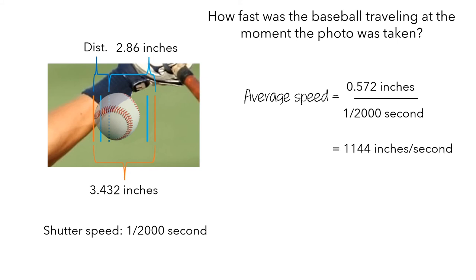And this is equal to 1,144 inches per second, which is the same as 65 miles per hour. While this isn't actually the instantaneous speed of the ball because it was taken over an interval of time, this average speed is a good approximation of the instantaneous speed of the ball.